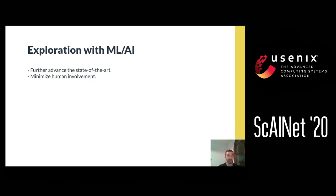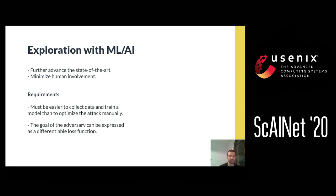Modern machine learning can actually help us advance further the state of the art if we incorporate it into this optimization process, with the added benefit that it can minimize human involvement. However, for that to be possible, there are a couple of requirements that need to be met. The first is that it should be easier to collect data and train a model than to optimize the attack manually. And the second is that the adversary's goal needs to be expressed in some form that makes sense for the machine learning model — in that case, a differentiable loss function.